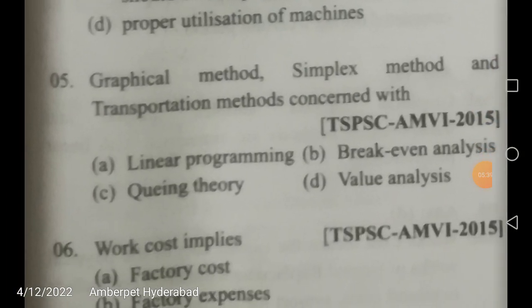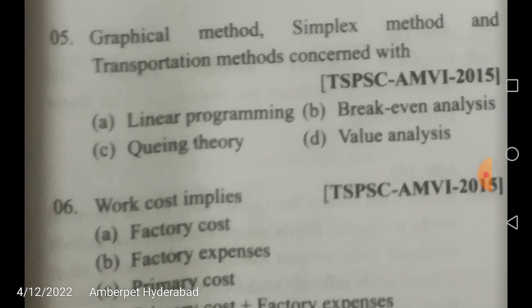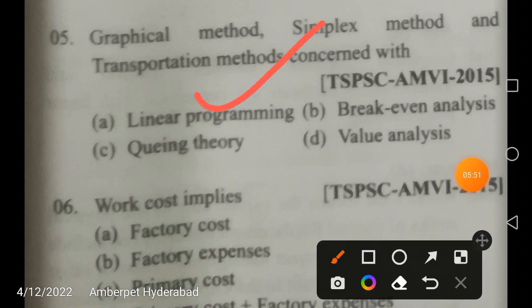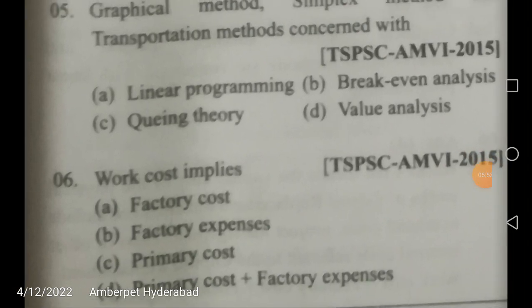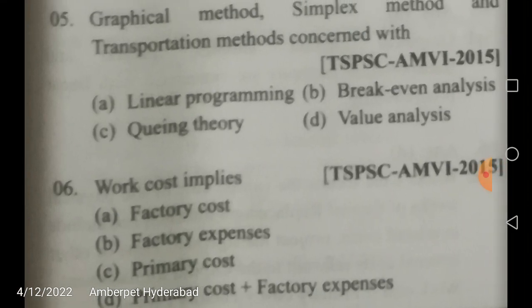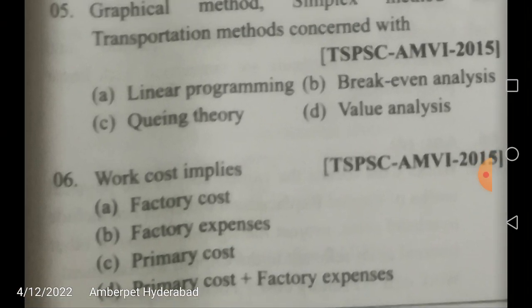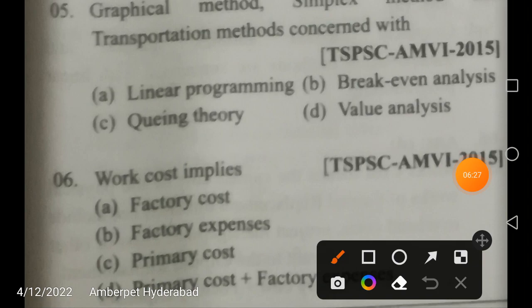Graphical method, simplex method, and transportation methods are concerned with linear programming — not queuing theory, value analysis, or break-even analysis. Queuing theory deals with waiting time in a queue, such as at a railway or bus station. Works cost consists of factory cost, factory expenses, and primary cost.